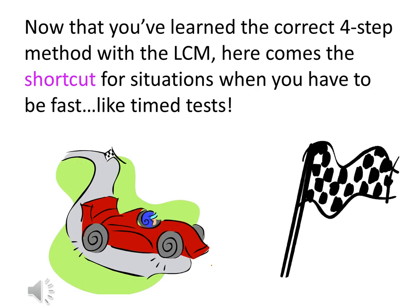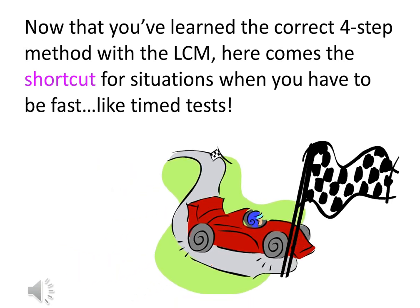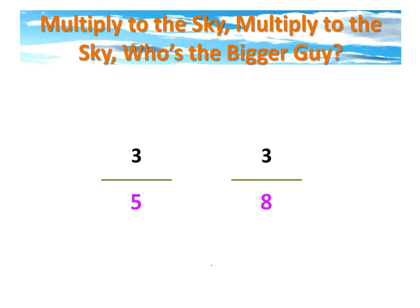Now that you've learned the correct 4-step method with the least common multiple, here comes the shortcut for situations when you have to be fast, like time tests. Multiply to the sky, multiply to the sky, who's the bigger guy? A rhyme to help you remember when comparing two fractions that you have to multiply in an upwards direction. Five times three gives you 15 over there, and crossing upward towards the sky, eight times three gives you 24 over there.